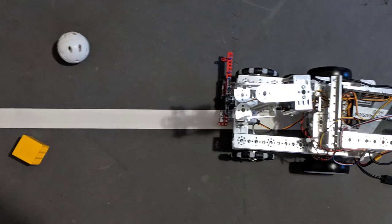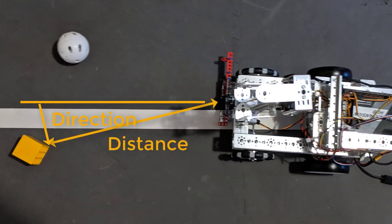To navigate to a gold mineral, we need to know two things: its direction and its distance. The TensorFlow system provides an estimated angle to an object, but it doesn't provide an estimated distance.